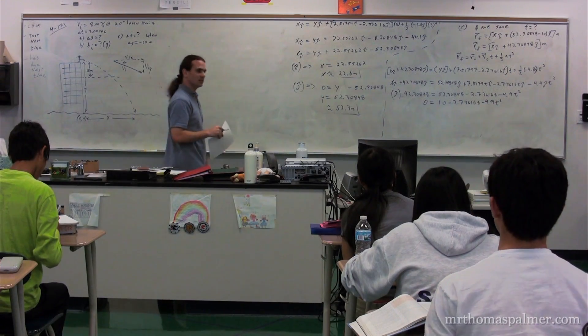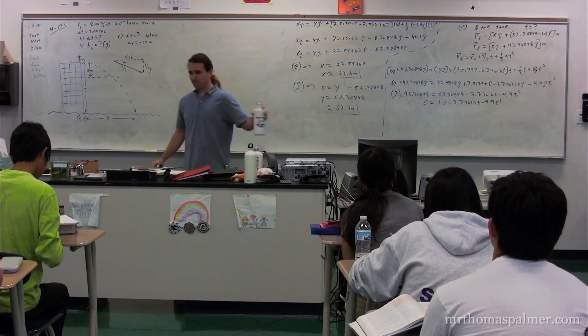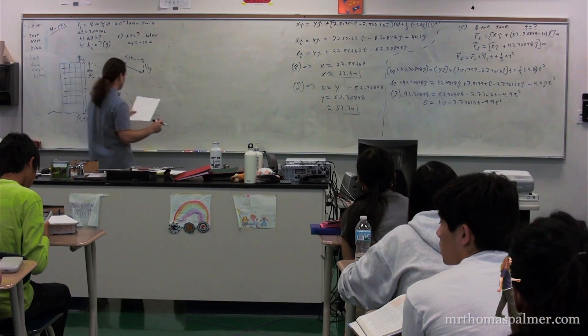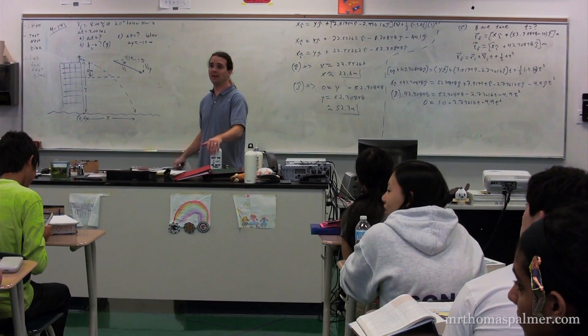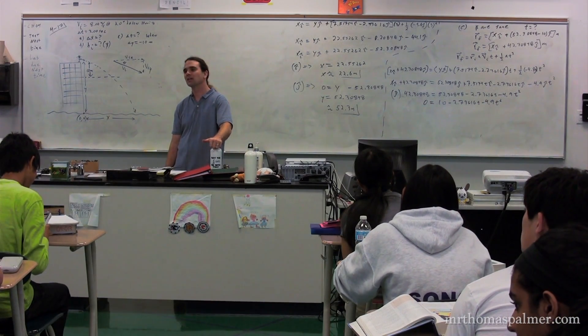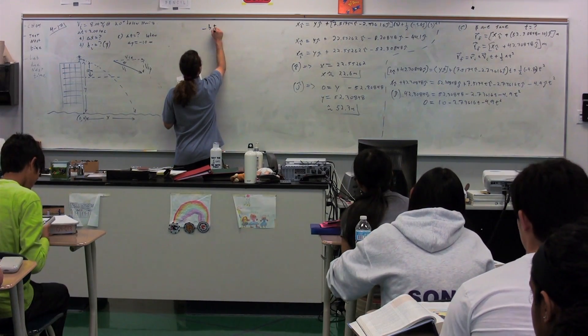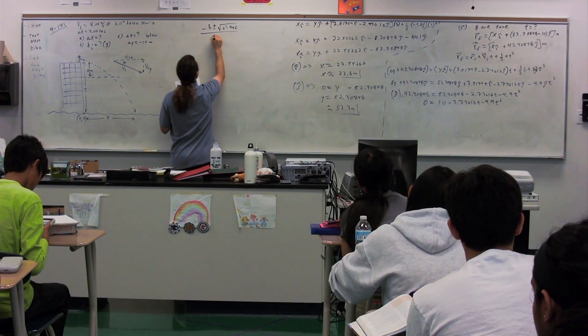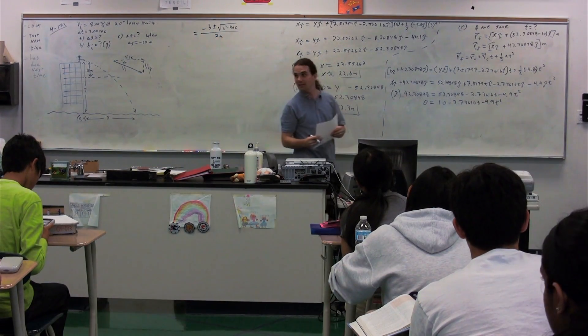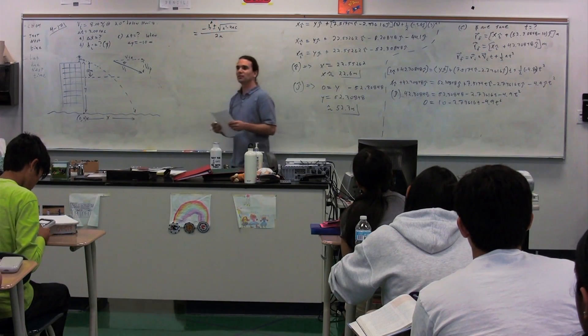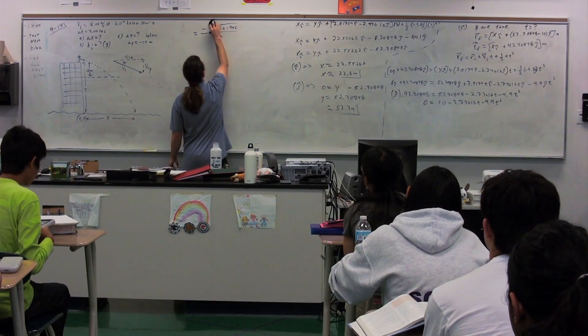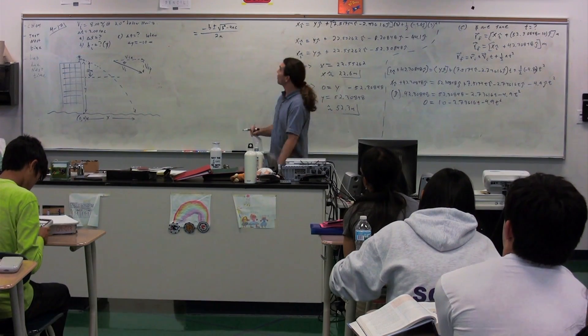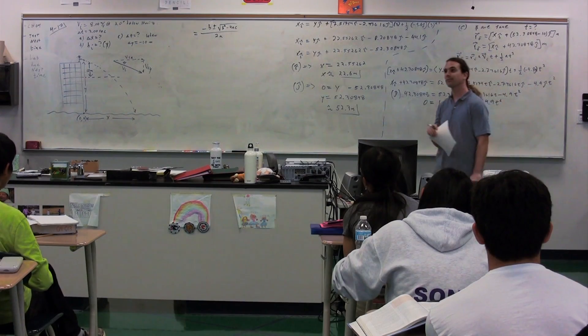Which means we need to use, class, quadratic formula. So we need to write down the quadratic formula. Negative b plus or minus the square root of b squared minus 4ac, all over 2a.